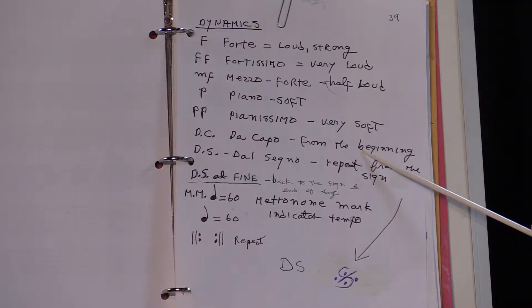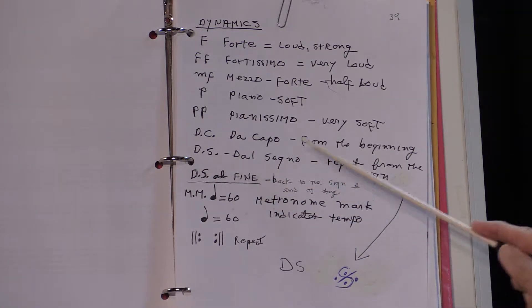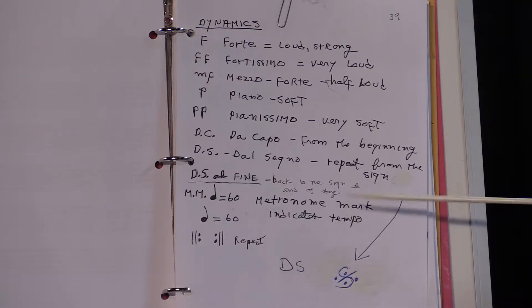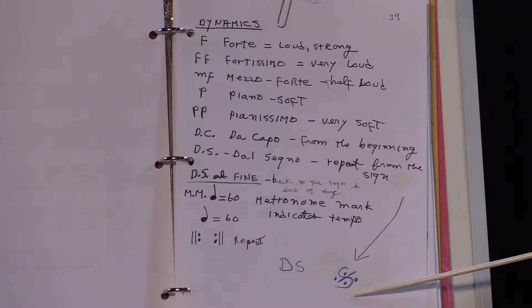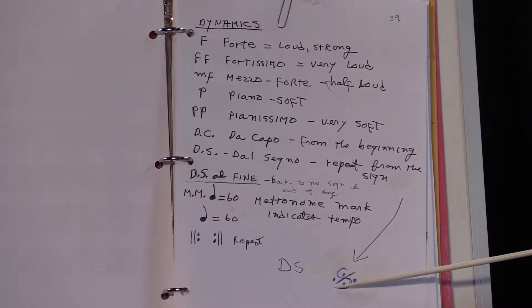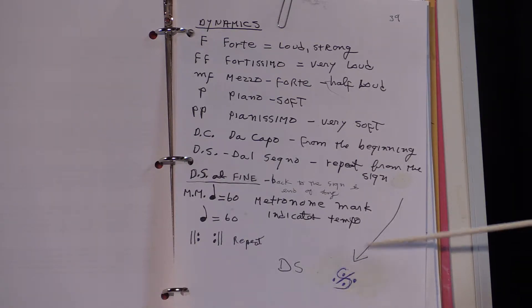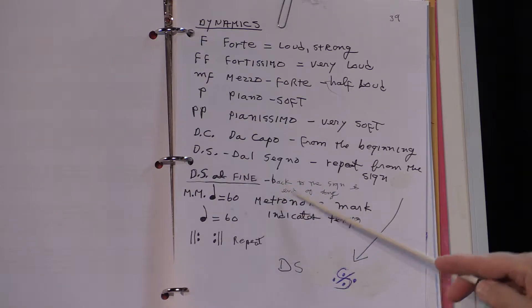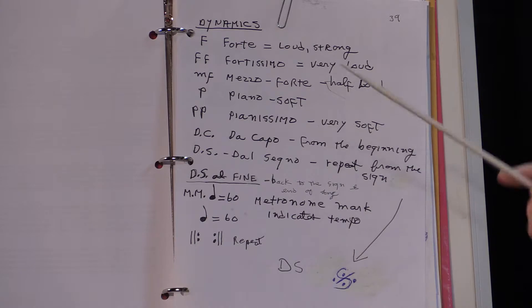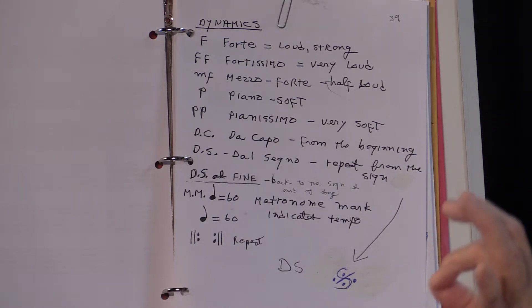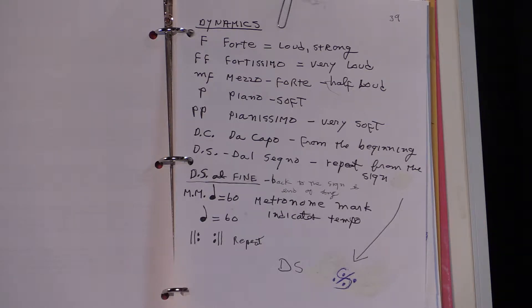DS — Dal Segno — means go back to the sign. This is the sign right here; it looks like an odd little S with a slash across it and four little dots, one in each segment. That means go back to the sign, which can be anywhere in the music, as long as you eventually reach 'Fine' — Al Fine — which means the end. DS al Fine means go back to the sign and play to the end of the song. You know you're at the end when it says Fine, spelled F-I-N-E, pronounced 'fee-nay.'